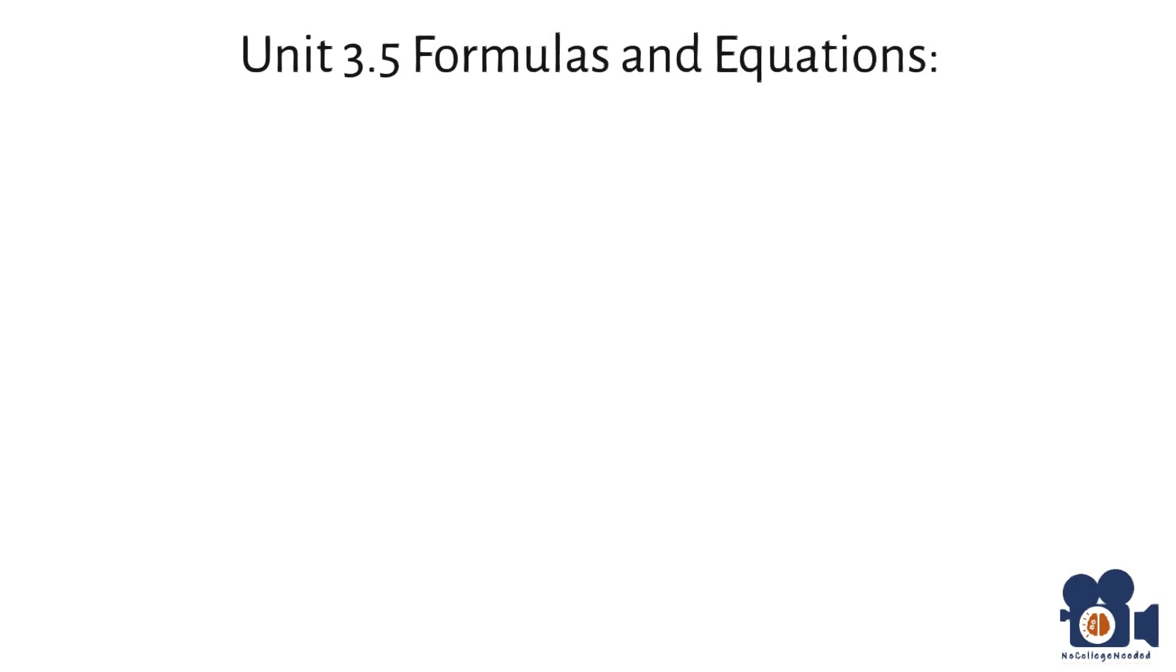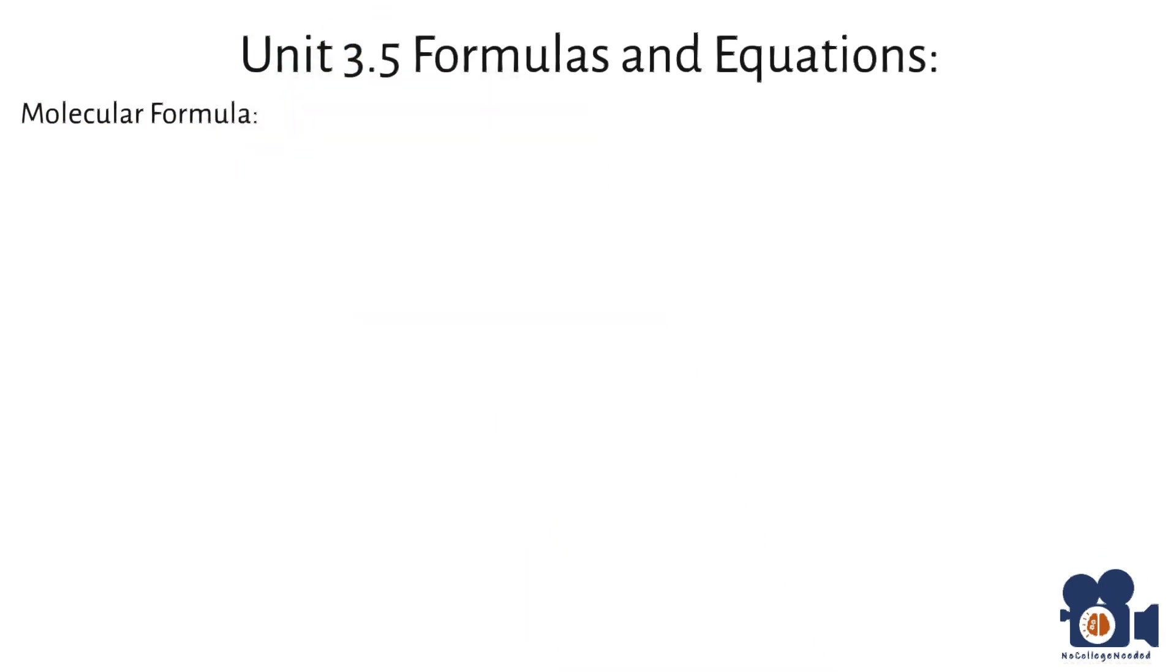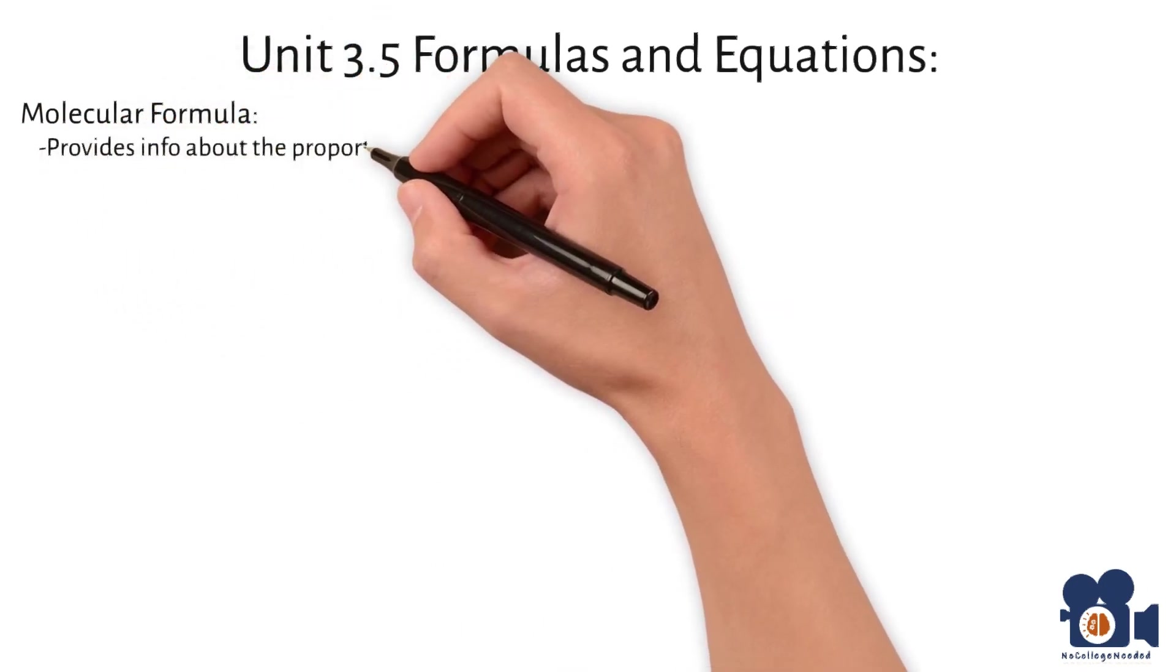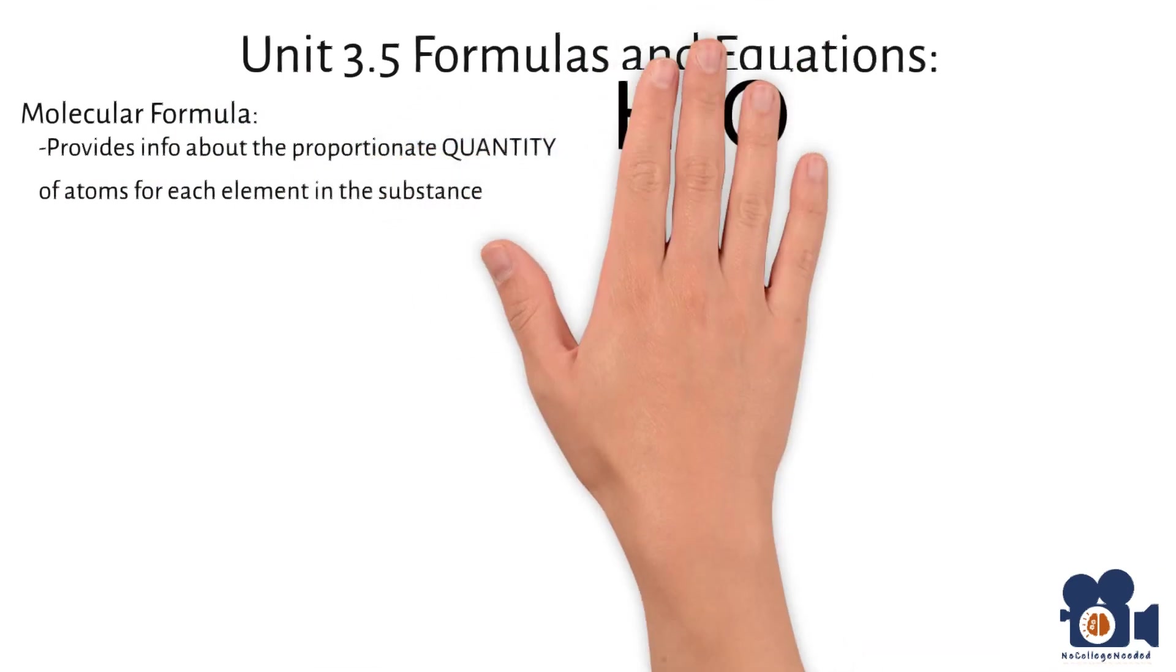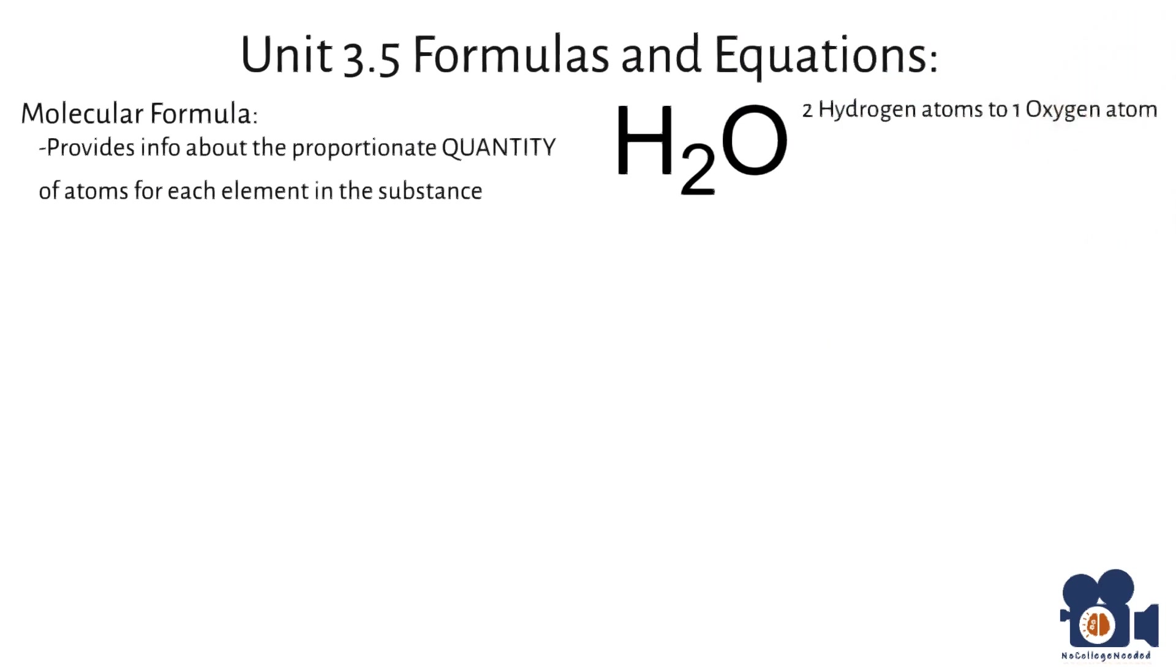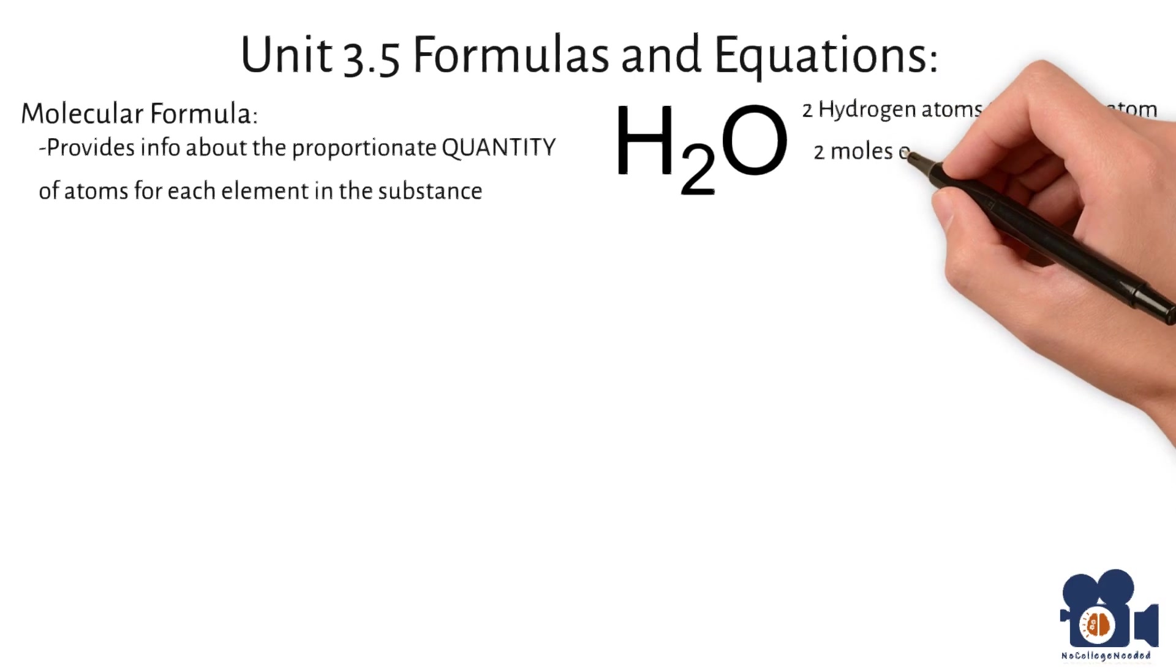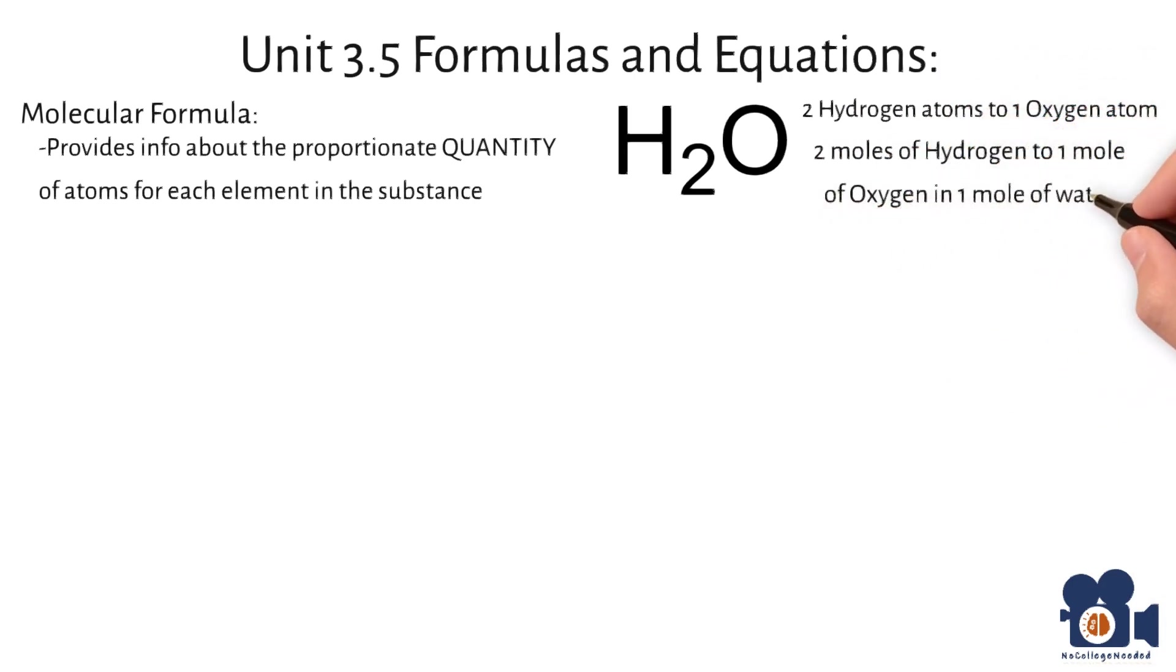Unit 3.5. As discussed in the previous unit, the molecular formula of a substance provides information about the proportionate quantity of atoms for each element present in the substance. For example, in H2O, there are two hydrogen atoms to one oxygen atom, and as stated in the previous video, there are two moles of hydrogen to one mole of oxygen in the one mole of water.